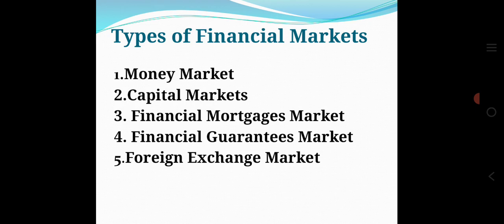Next topic, types of financial markets. There are five types of financial markets: money market, capital market, financial mortgages market, financial guarantees market, and foreign exchange market. First one, money market: It is a market for short term funds, normally up to one year. It refers to the institutional arrangement which deals with the short term borrowing and lending of fund. It is a short term credit market.